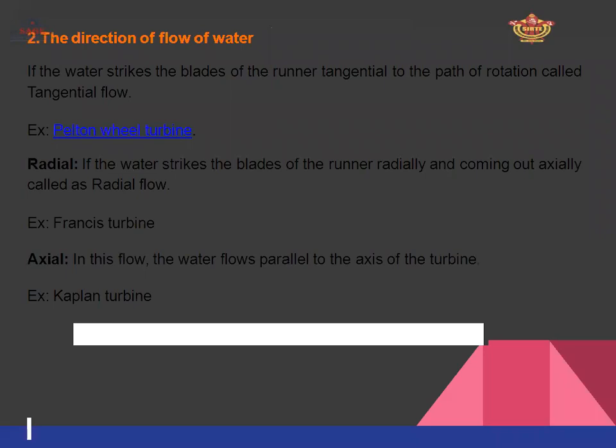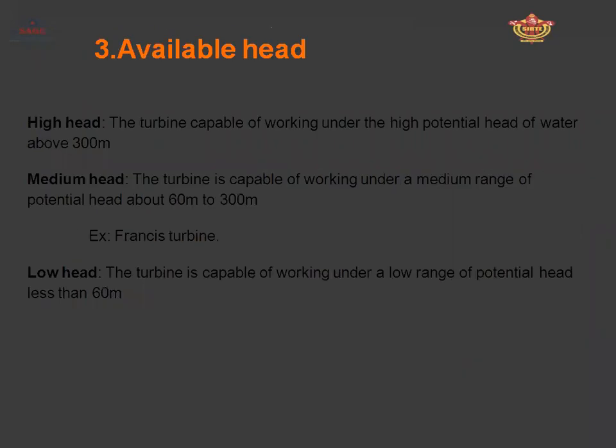When water flows parallel to the axis of the turbine, it is called an axial flow turbine. The Kaplan turbine is an example of an axial flow turbine. Regarding head classification: there are high head, medium head, and low head turbines. A high head turbine works above 300 meters. A medium head turbine works from 60 meters to 300 meters, and the Francis turbine is an example of a medium head turbine.